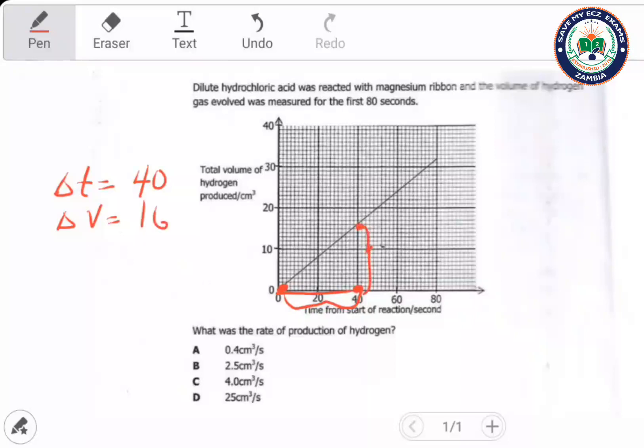So we're going to say the rate is equal to 16 over 40. Let's get the calculator and work out the answer. So this is 16 by 40, equals 0.4. 0.4 is exactly here.